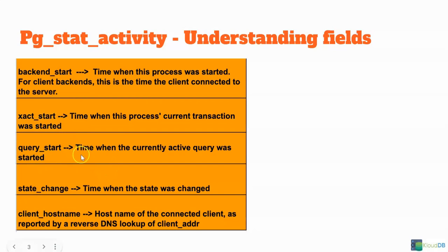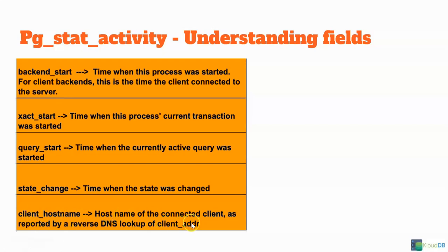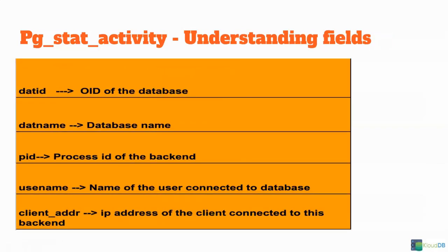And then query_start is the time when the currently active query was started. If you want to know when the current query started, you can refer to this column. State_change is the column showing when the state changed — for example, the earlier state was idle and now it became active, or when it went into the wait state. This field gives us the exact time when the state changed. And then client_hostname is the hostname of the connected client, as reported by a reverse DNS lookup of the client address. These are the important fields in PG Stat Activity.